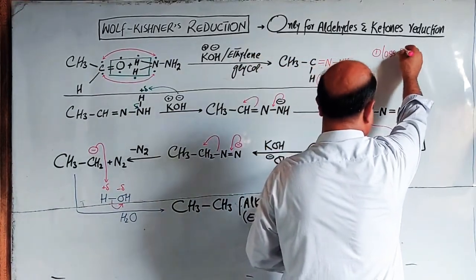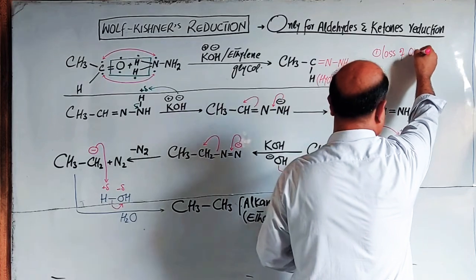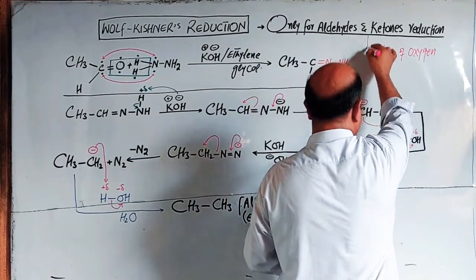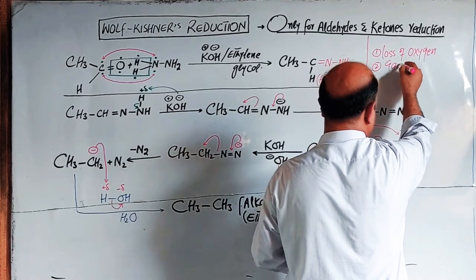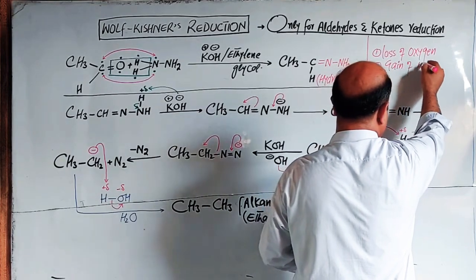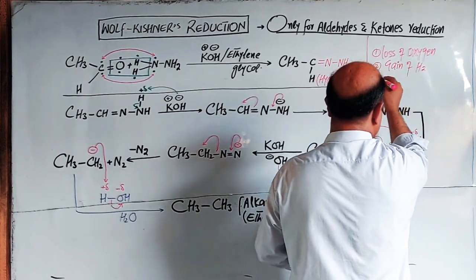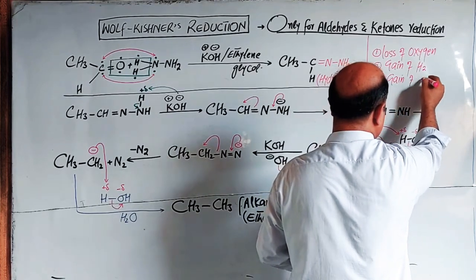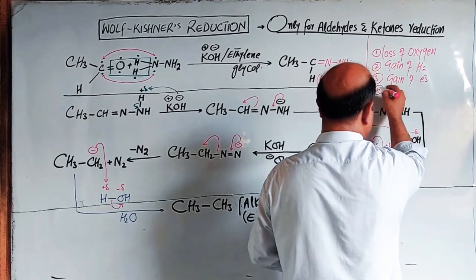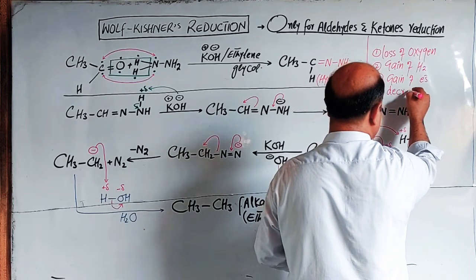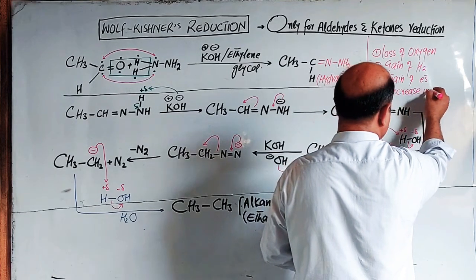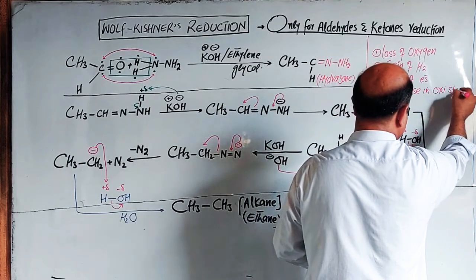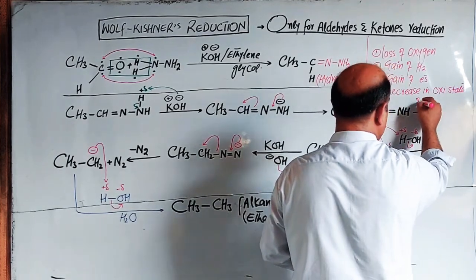This reduction process involves: loss of oxygen — that is very vital; gain of hydrogen — that is very vital; gain of electrons; and decrease in oxidation state of carbon. All four criteria confirm that the Wolf-Kishner process is indeed a reduction.